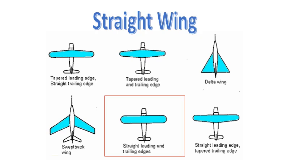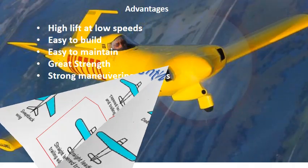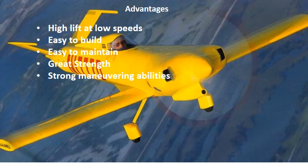Let's get started with the straight wing. The straight wing is very simple — it goes out from the fuselage at a 90-degree angle. In the example here, it has wingtips to make the ends rounded; most straight wing airplanes will have wingtips. The advantages: it's going to have high lift at low speeds — you'll notice agricultural airplanes usually have a straight wing. They're also easy to build and easy to maintain, very strong due to their simplicity, and they maneuver really well.